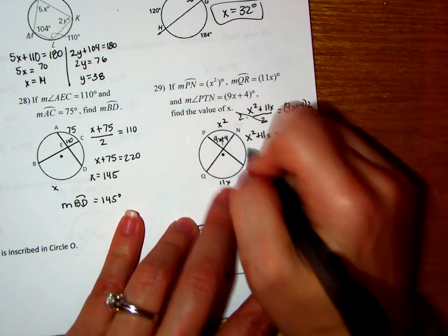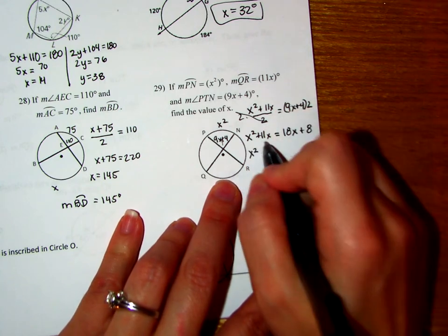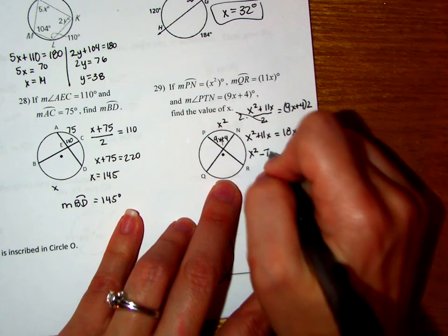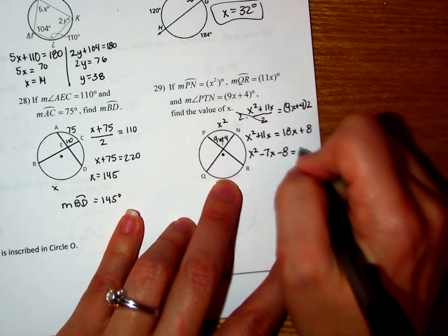Now let's move everything this way. So I have X squared. If I do minus 18X from both sides, 11X minus 18X is negative 7X. If I subtract 8 from both sides, that's going to be minus 8 equals 0.